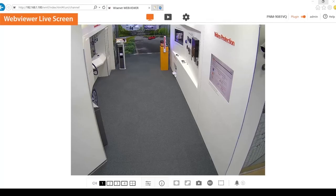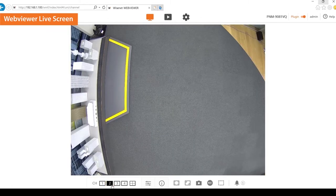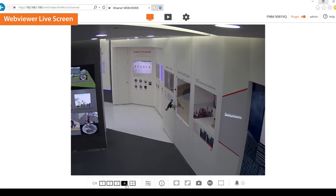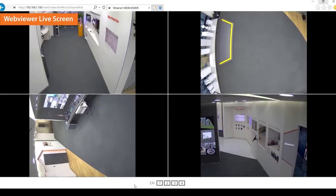Now, let's look into the WebViewer live screen. By selecting the channel buttons, the viewer will show the desired channel. To view all channels in a single screen, select the 4-channel button. You can see the channel 3 lens has been rotated 90 degrees clockwise and needs the hallway view set up.